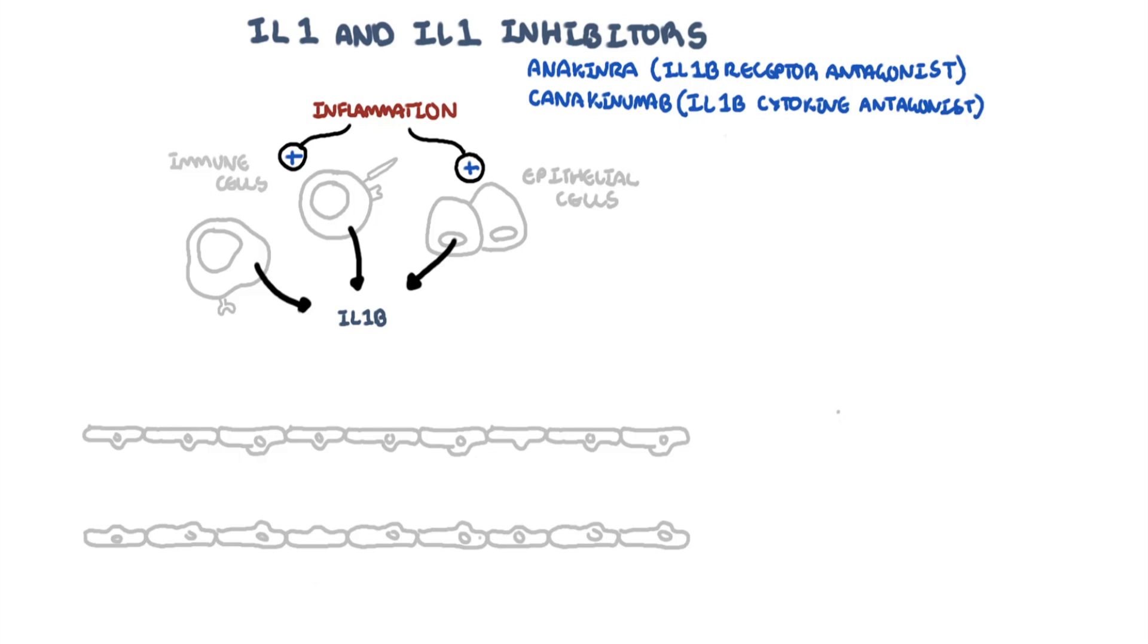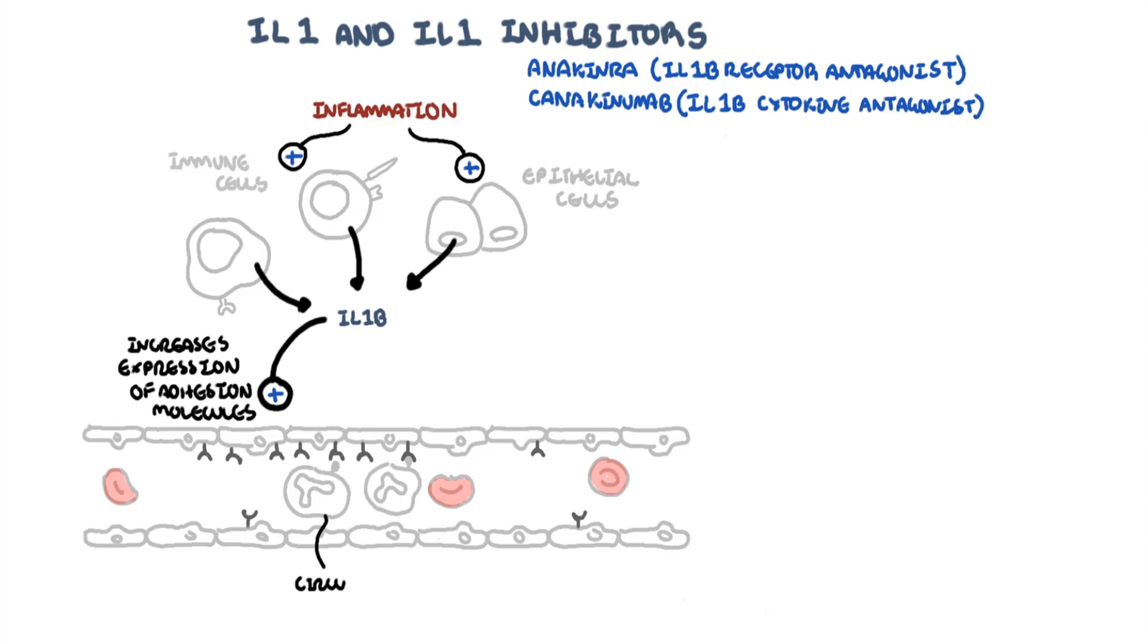Interleukin-1b, once secreted, acts on different types of cells in the body. For example, it acts on the cells of the vessel, increasing the expression of adhesion molecules, and when it does this, it allows migration of other immune cells to the site of inflammation. Circulating neutrophils and circulating monocytes can get recruited to the sites of tissue inflammation, again promoting the inflammatory response.